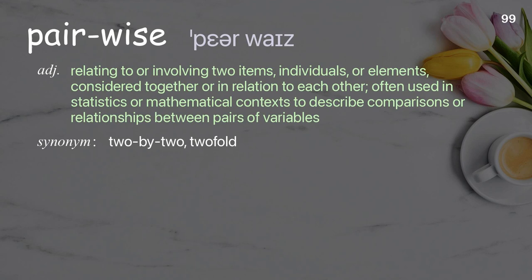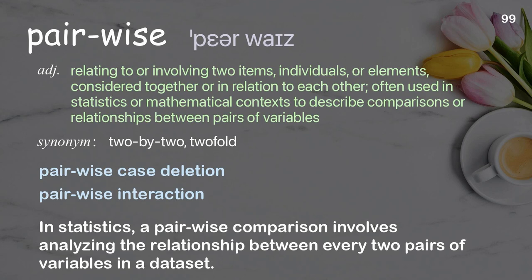Pair-wise: relating to or involving two items, individuals, or elements considered together or in relation to each other; often used in statistics or mathematical contexts to describe comparisons or relationships between pairs of variables. Examples: pair-wise case deletion, pair-wise interaction. In statistics, a pair-wise comparison involves analyzing the relationship between every two pairs of variables in a dataset.